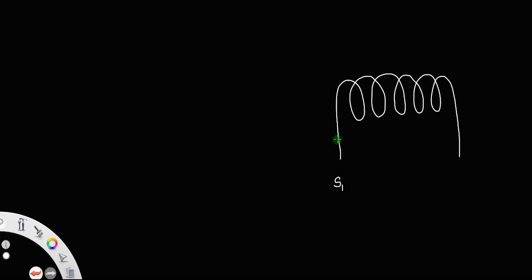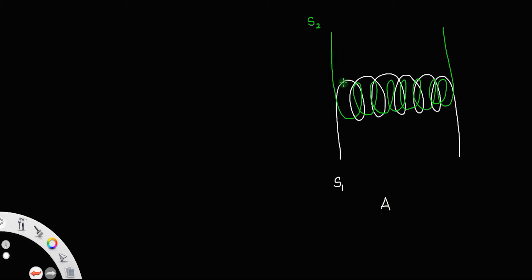Let us discuss the mutual inductance of a system of two coils. Consider two coils: the first coil, let us call that coil S1, and another coil shown in green, which is kept inside the first coil — let us call that coil S2. Although S2 is kept inside S1, they have almost equal areas, meaning the radius of both coils remains the same. So we can assume the area of the first coil is almost equal to the area of the second coil, and for convenience let us take that as A, the area of cross-section of the coil.